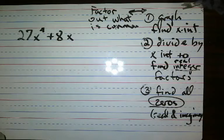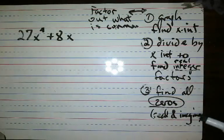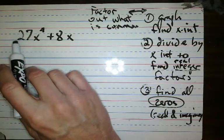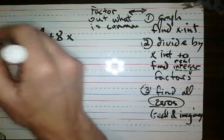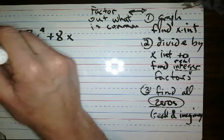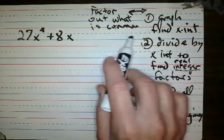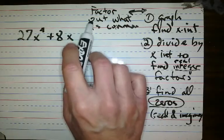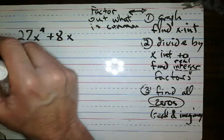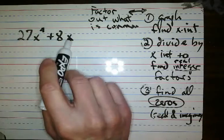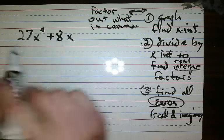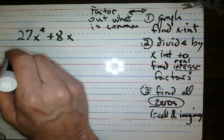We are still trying to find all the x-intercepts, trying to find all the factors, but we're starting with something that looks like this. What I would suggest is that you always factor out what's common first. There's no number that divides into both numbers, but x is common.